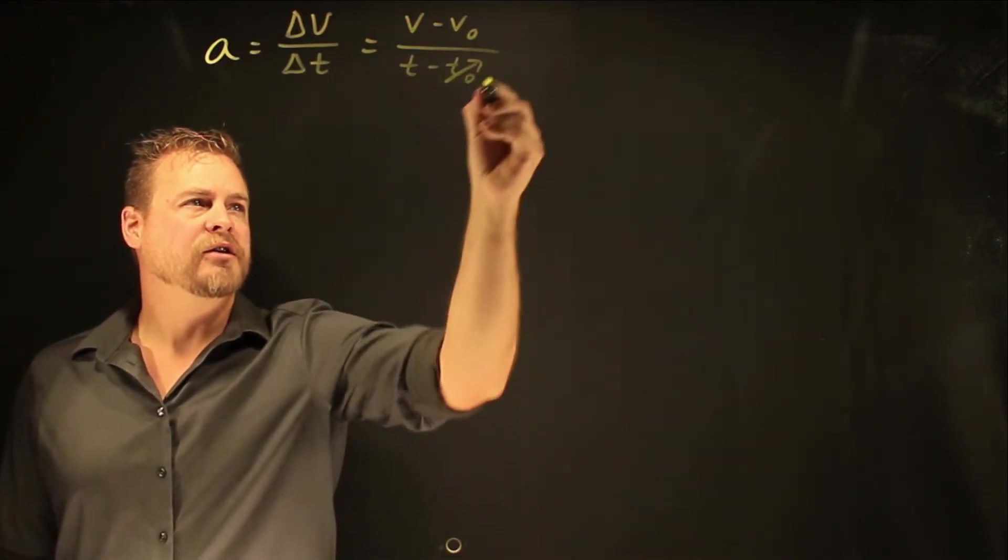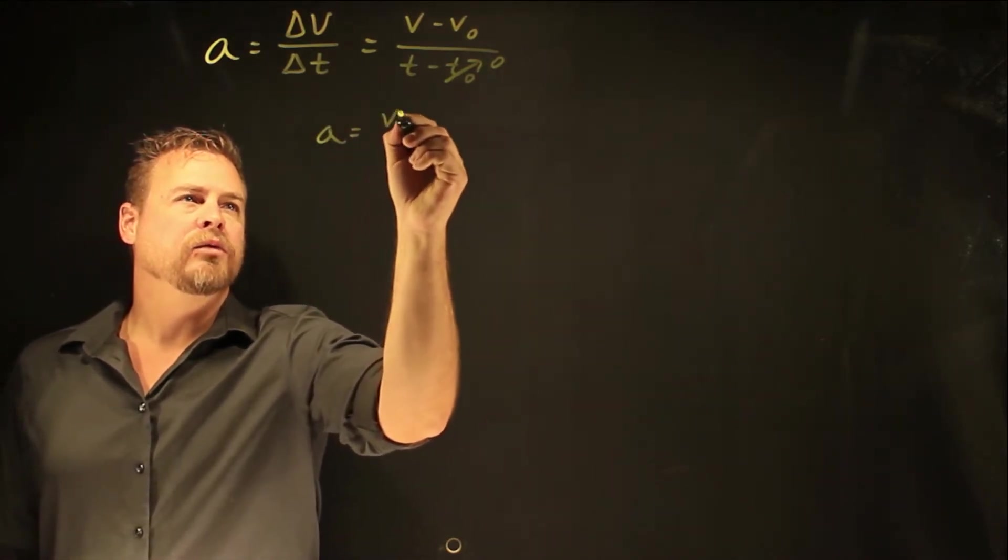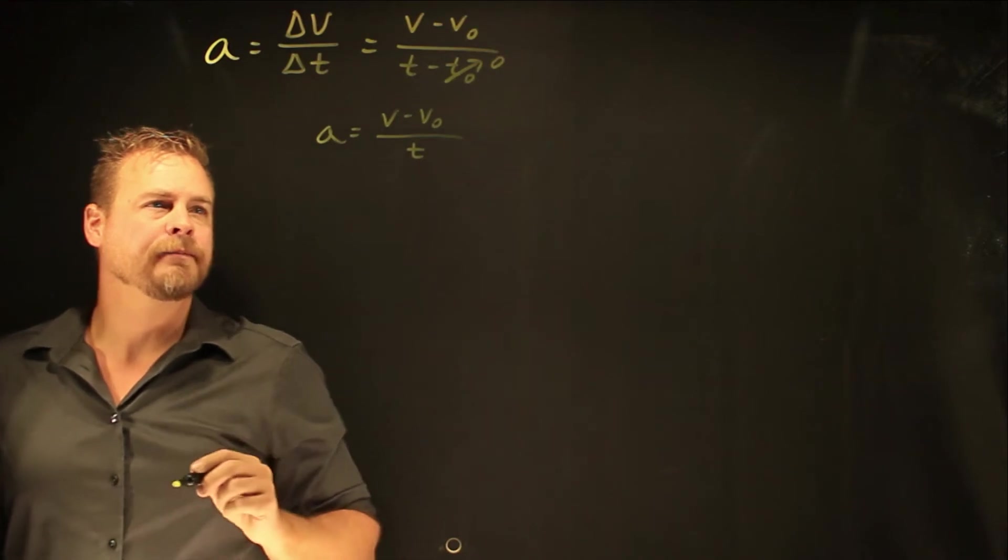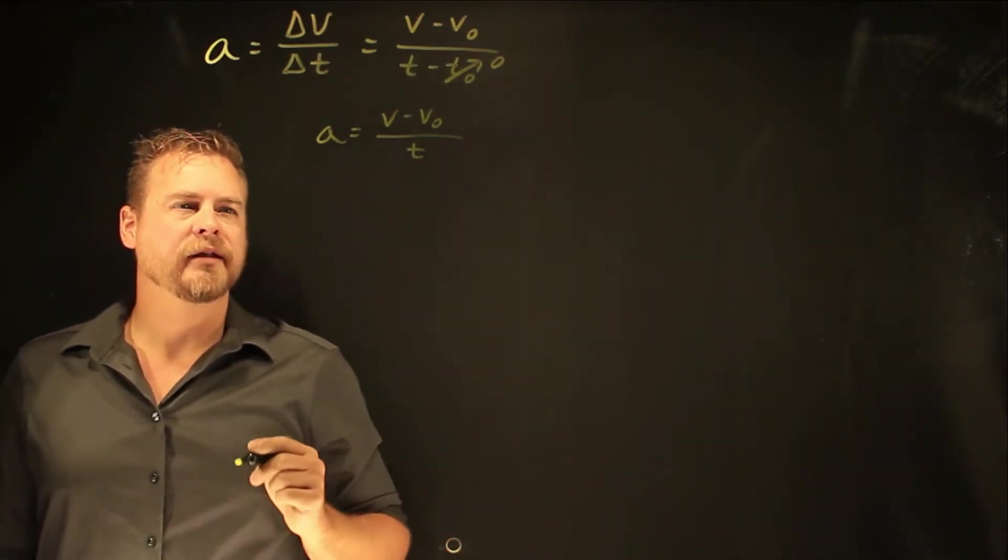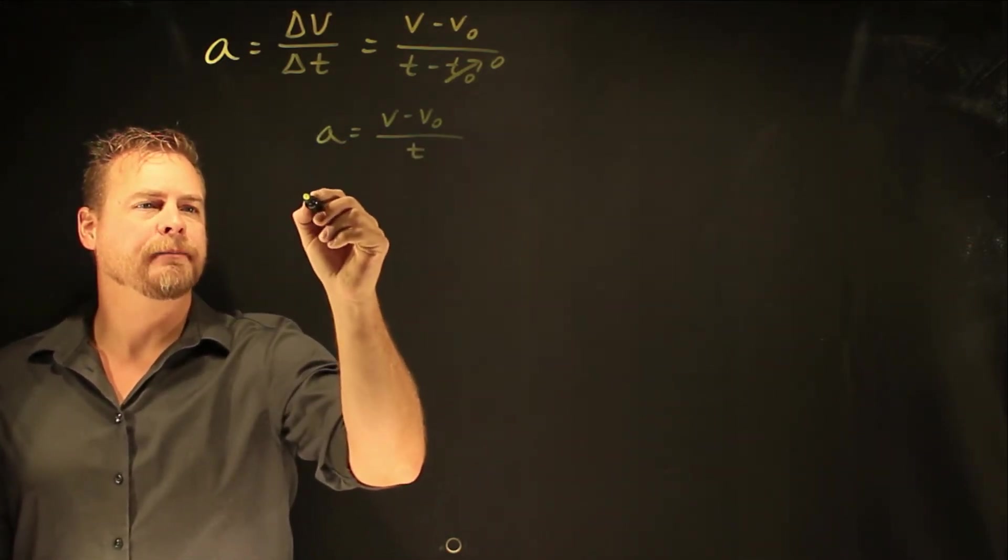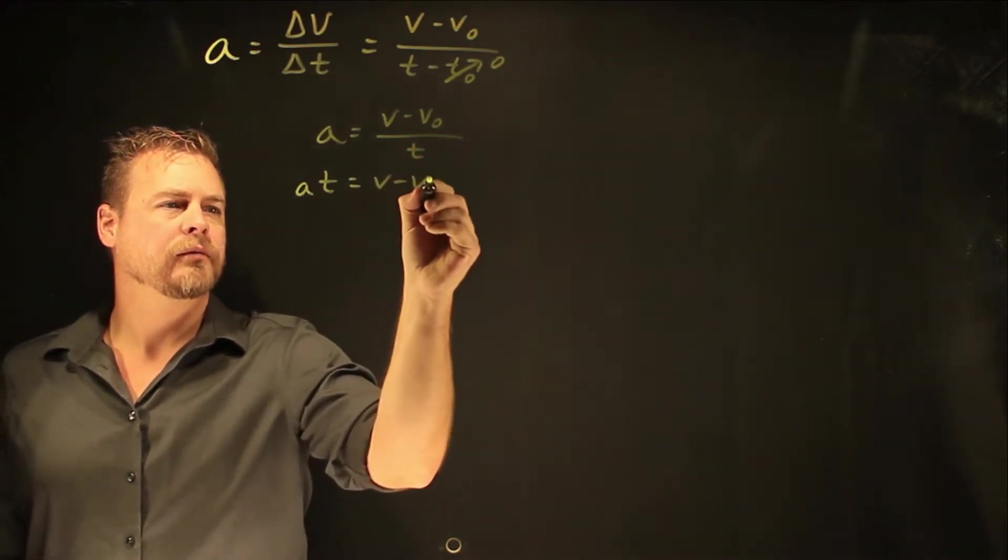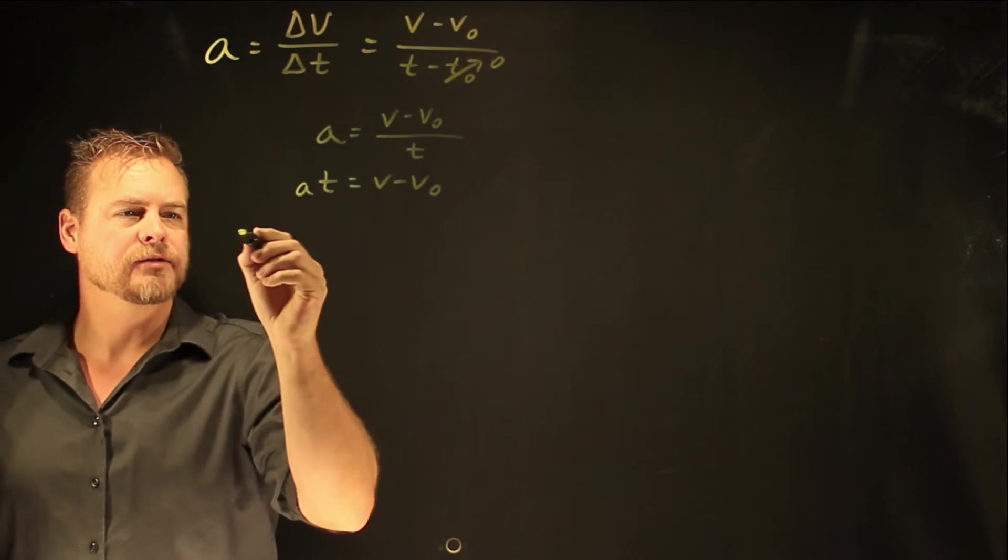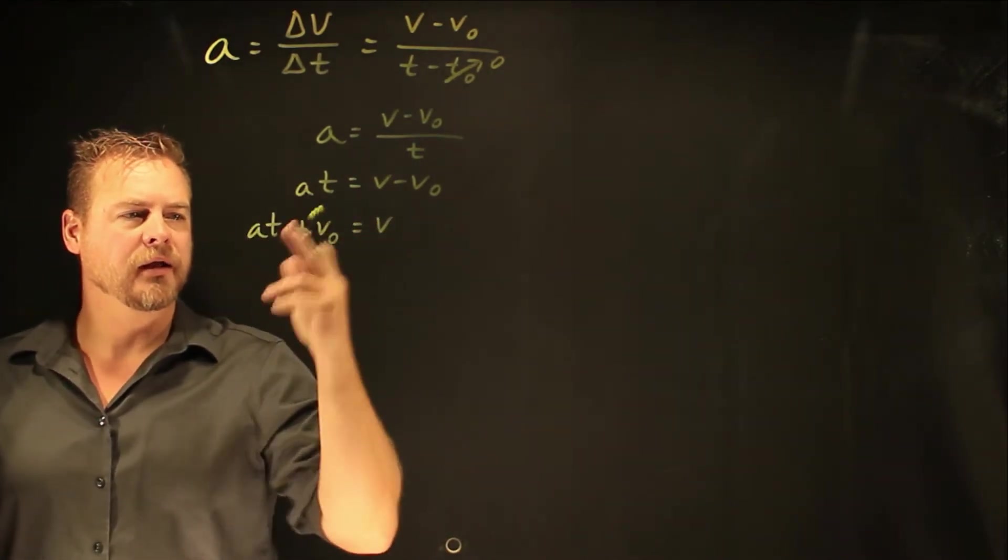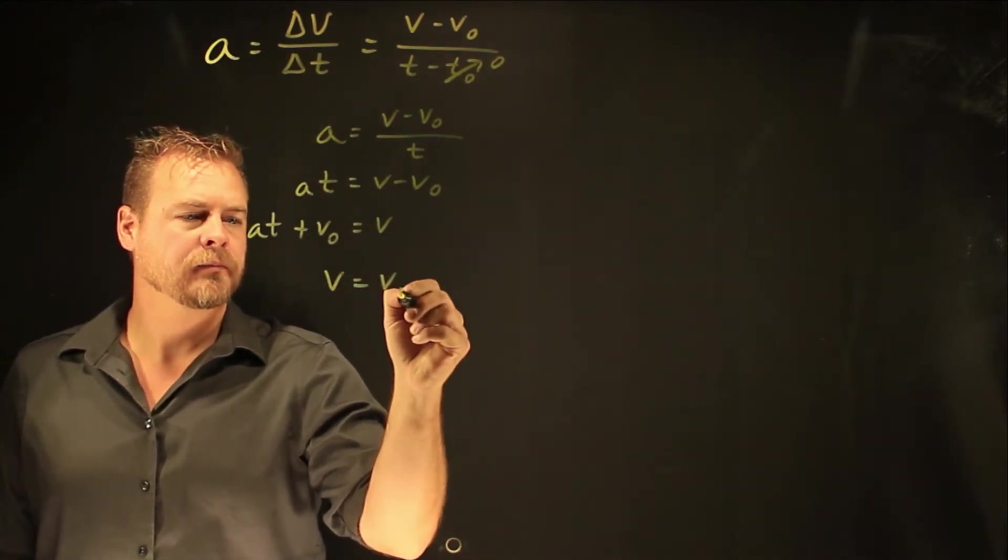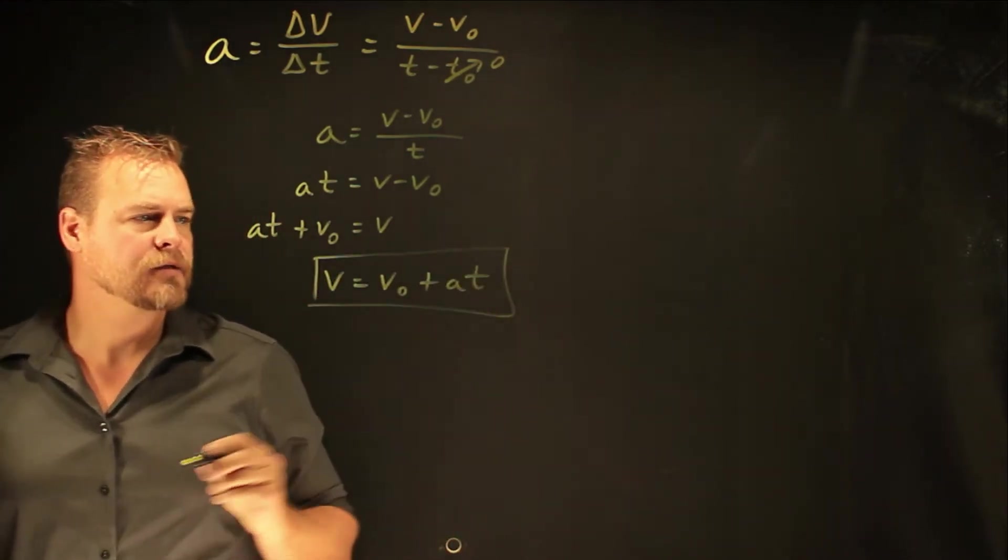Just like with change in position, our time is usually zero, and so it goes away. I'm going to rewrite this as a equals v minus v naught over t. And then I'll do the same mathematical flip-flopping that I did with change in position. Multiply both sides by t, and then I'm going to add that naught turn over. So at plus v naught equals v. And again, we usually see it written the other way around. This is your second kinematic equation.